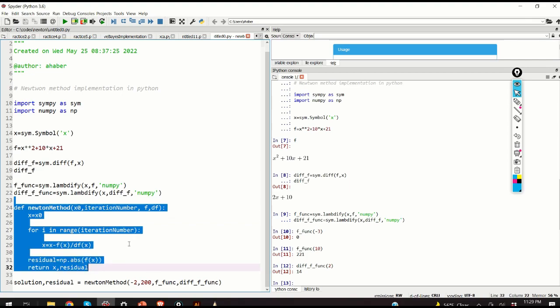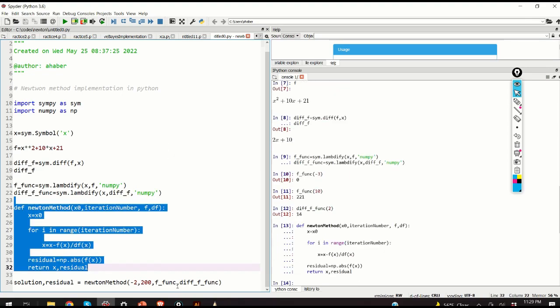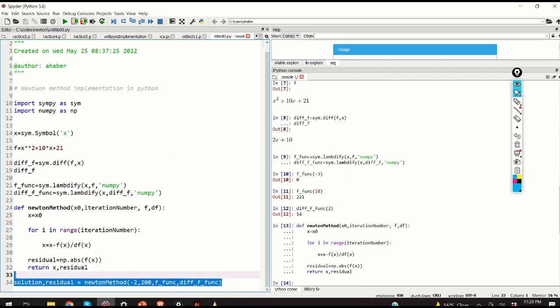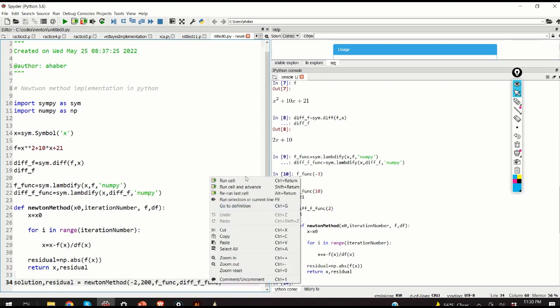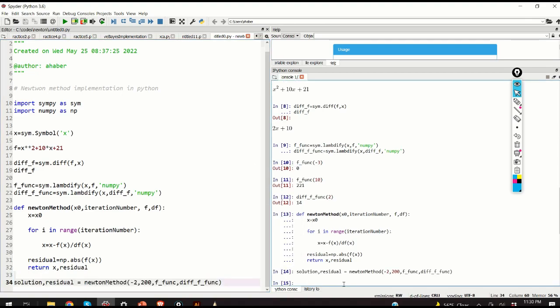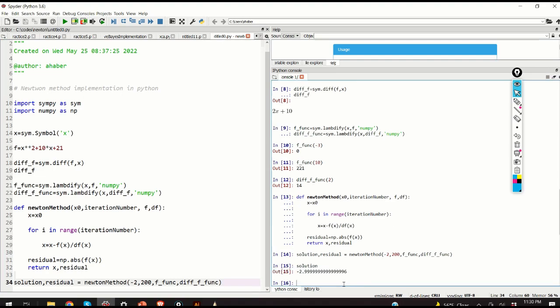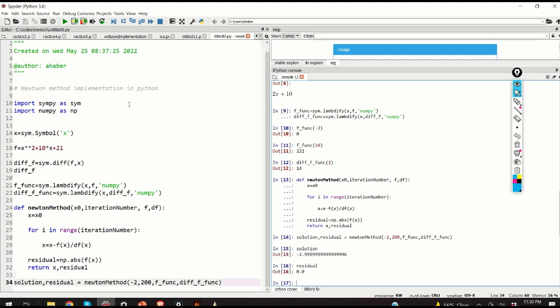So, let's define our function and let's finally call the function. Here, I specify the point minus 2. The point is close to my minus 3. I specify number of iterations 200, specify the function, its derivative. And let's go. Let's see what happens. Let's see the solution. Here's the solution, almost 3. Let's see the residual. Should be 0.